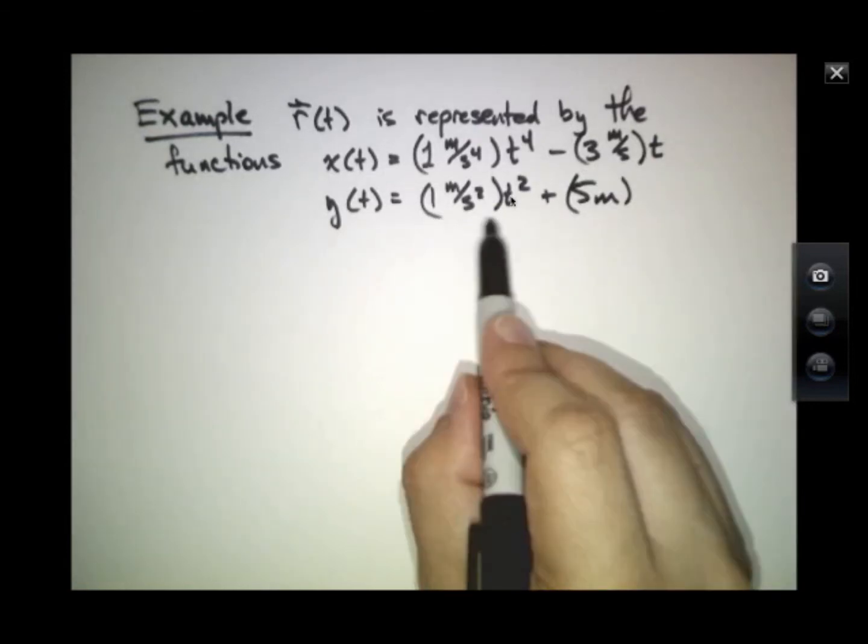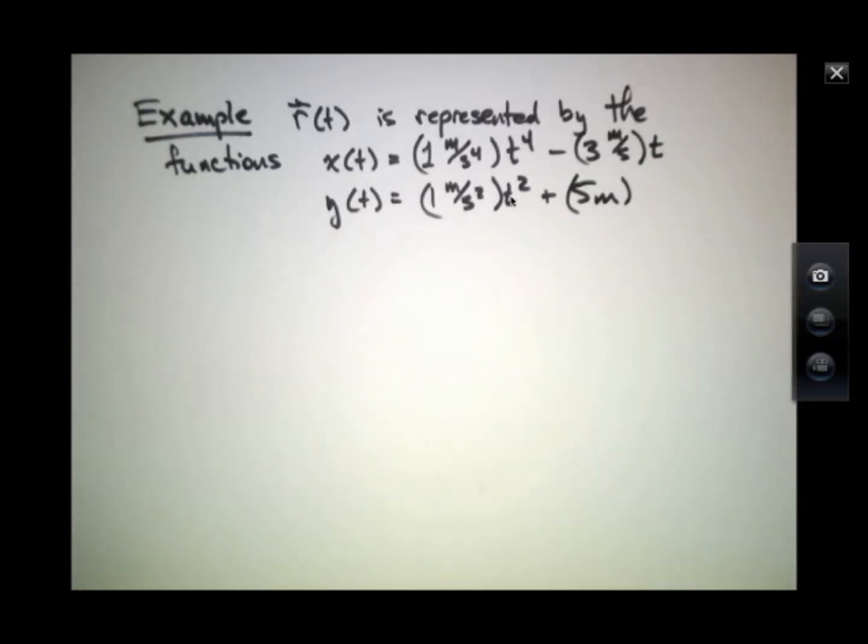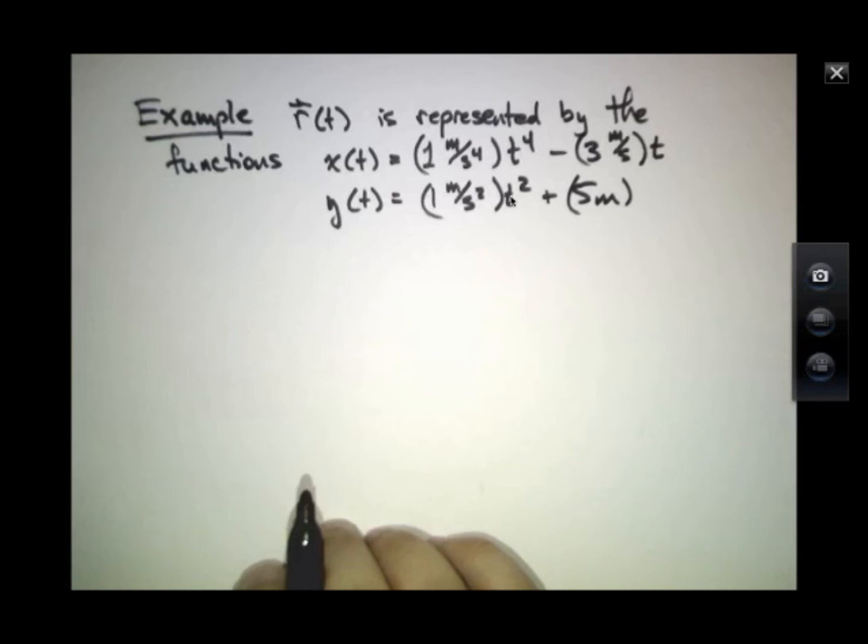So these things in parentheses here are just coefficients. You can notice that the quantity for R will come out in meters.